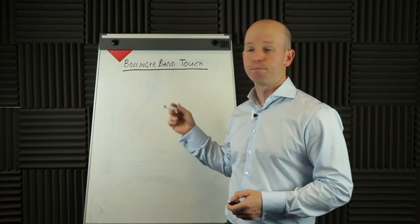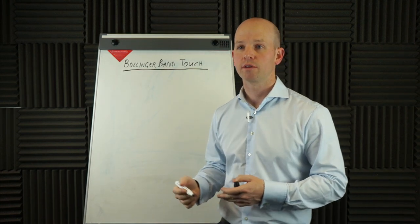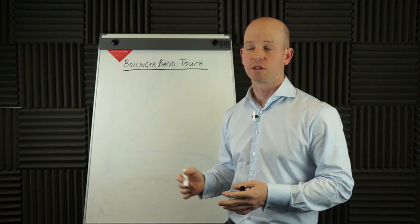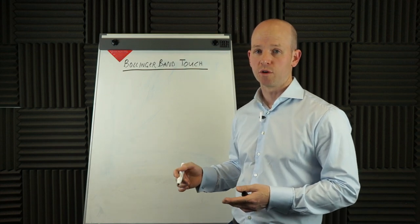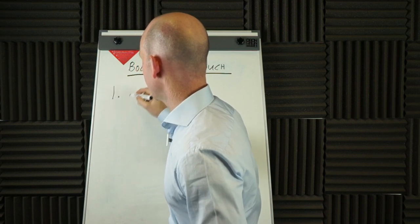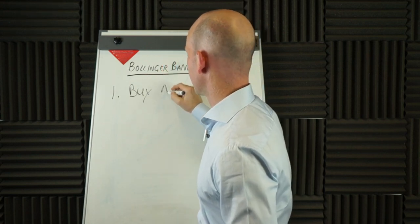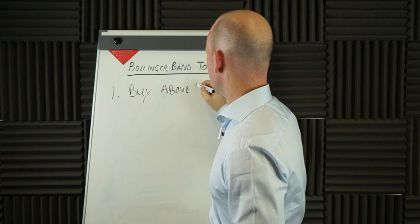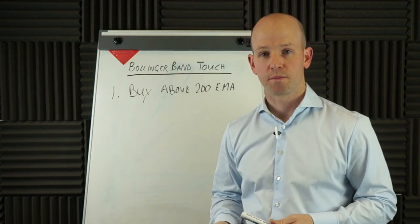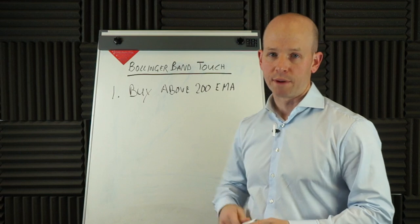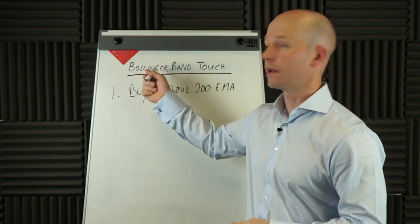The first thing we want on this strategy is a regime filter — to only go long in certain conditions, only go short in certain conditions. That condition is something widely popularised: a 200-period exponential moving average. So the first thing we look at is: if we buy, we need to be above the 200 EMA. And the opposite applies to go short. So once we know we're above the 200 EMA and we're looking for buys, then we look at Bollinger Bands.